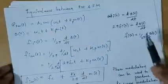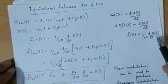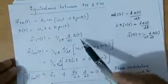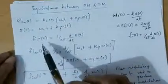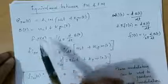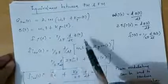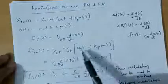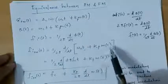So f_i(t) = (1/2π) · d/dt [θ(t)]. This is the instantaneous frequency of a PM (phase modulated) wave. And θ(t) can be replaced by ω_c t + k_p · m(t).